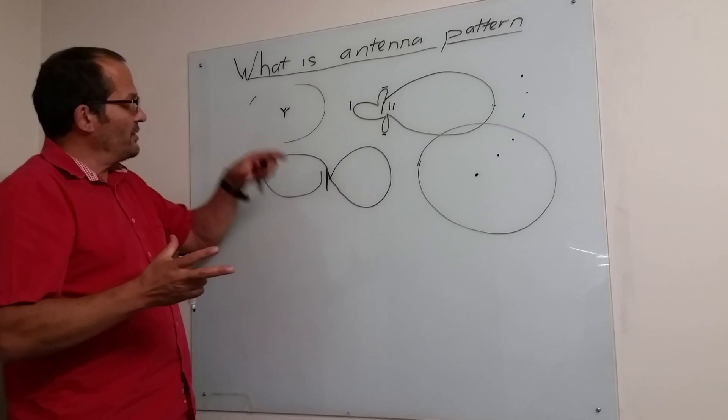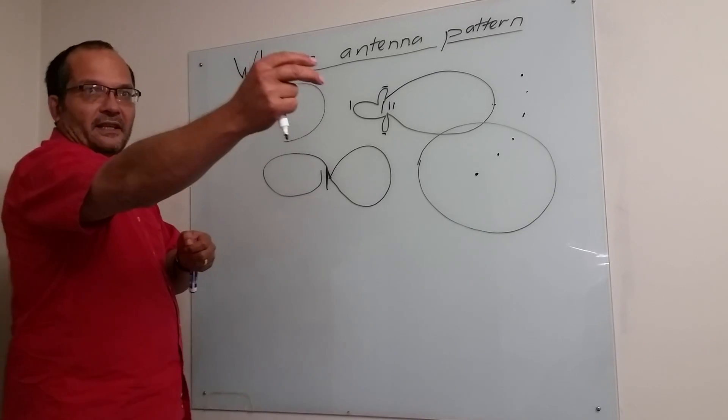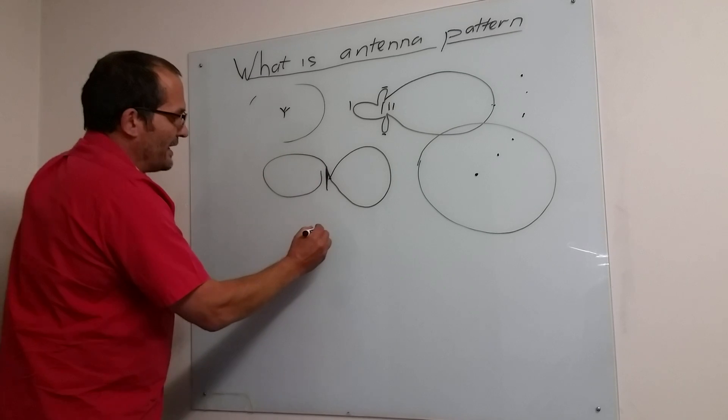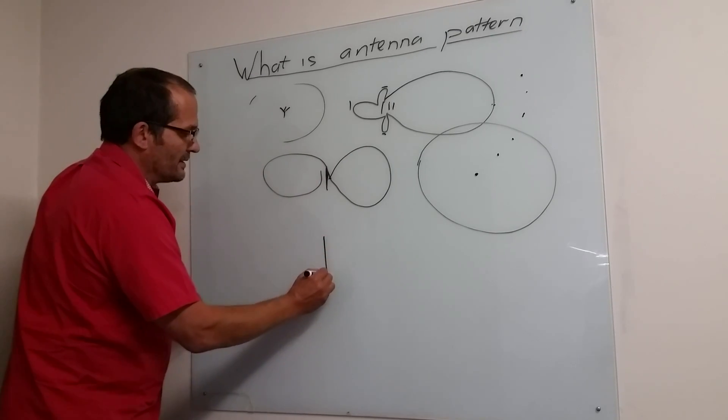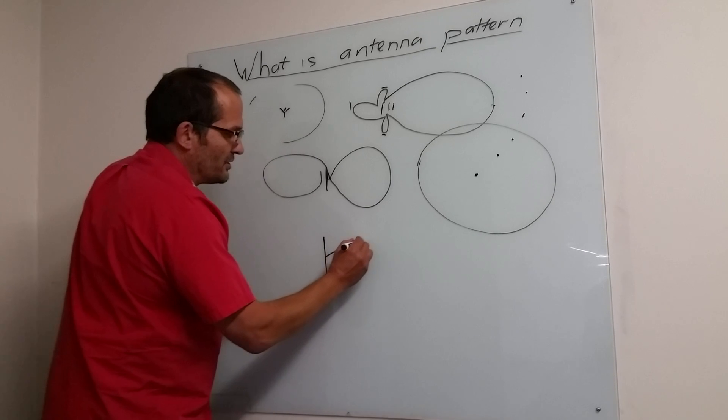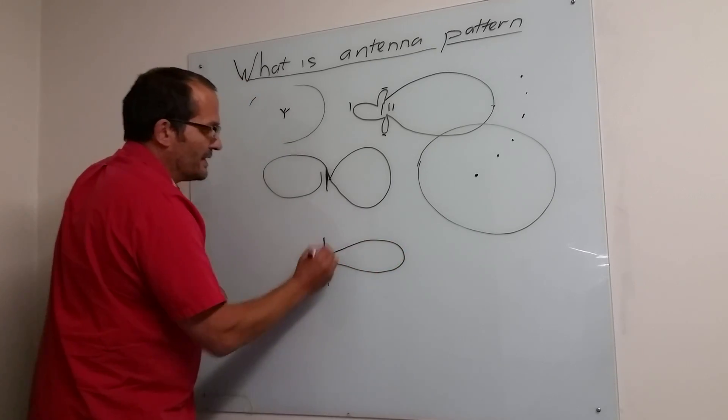So antenna patterns a little bit like a big balloon in the sky that you squash, and then you get some radiation going more in another direction. This one is squashed from the top and bottom. And if you then get high gain omnis, they typically longer, that's why I'm drawing like that.